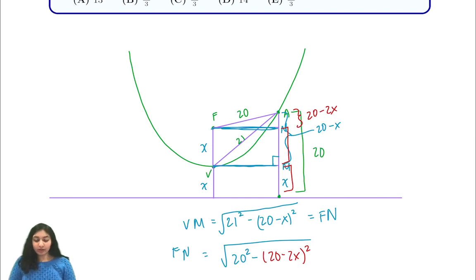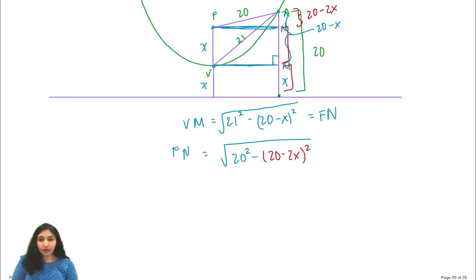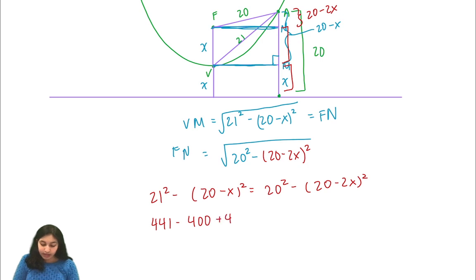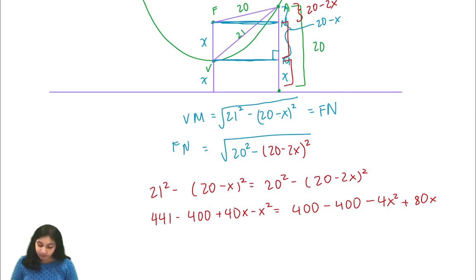So we now know that these two values are equal. So all we have to do is set them equal to each other and evaluate our expression. So we have 21 squared minus 20 minus X squared is equal to 20 squared minus 20 minus 2X squared, and we just squared both sides of our expression. So we have that 441 minus 400 plus 40X minus X squared is equal to 400 minus 400 minus 4X squared plus 80X. So now we will rearrange terms. That gives us 3X squared minus 40X plus 41 equals 0.